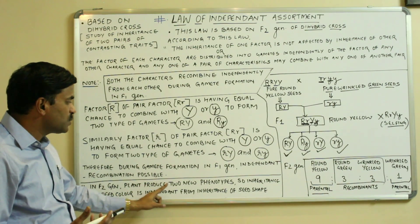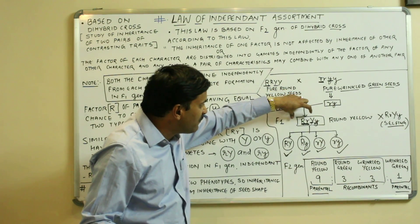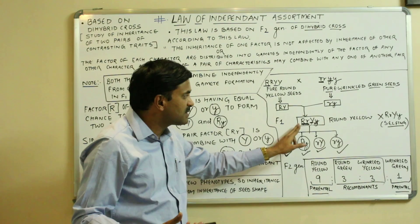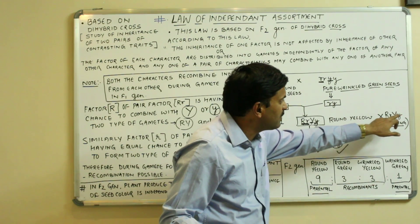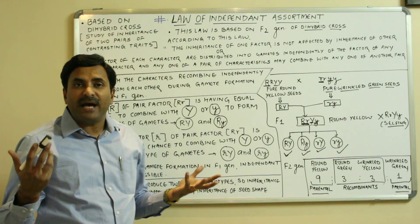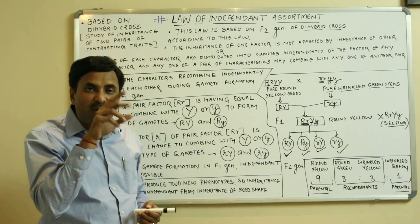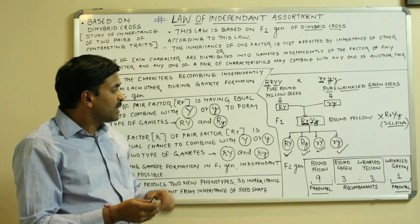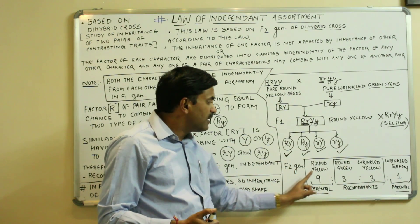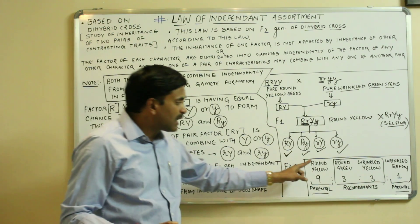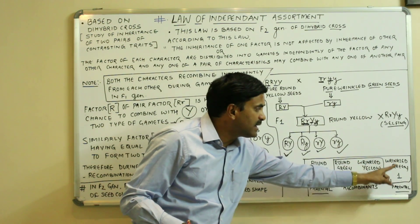In the F2 generation, plants produce two new phenotypes. When we self the F1 generation — that is, when capital R small r capital Y small y is crossed with the same genotype — a checkerboard of 16 boxes is formed. In that checkerboard the phenotypic ratio of the dihybrid cross is 9:3:3:1. Round yellow were 9, round green were 3, wrinkled yellow were 3, and wrinkled green were 1.